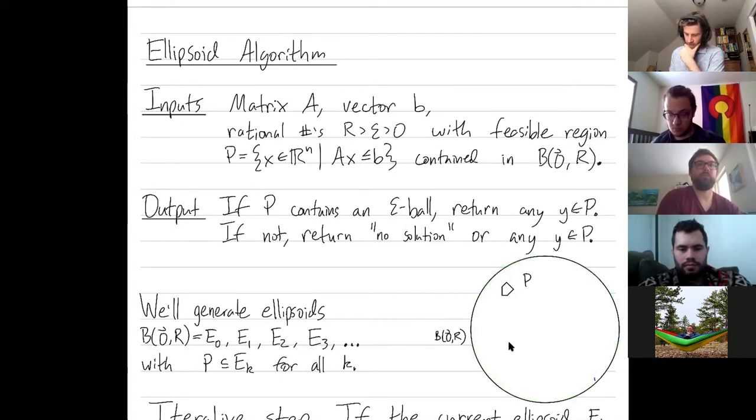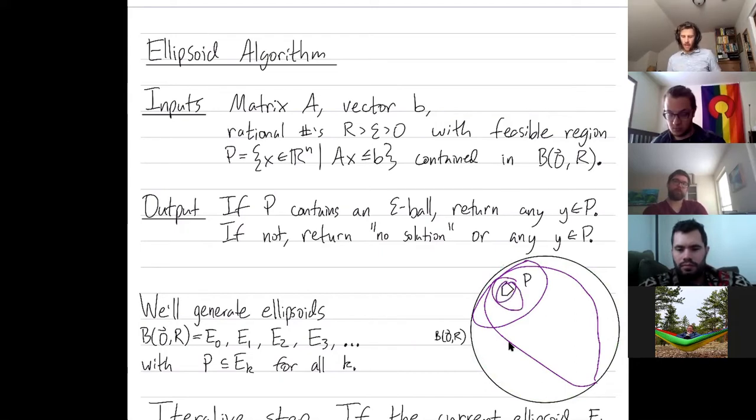And we're going to keep finding further and further ellipsoids of smaller and smaller volume that contain our feasible region. If ever the center of our ellipsoid is inside the feasible region, then we'll have succeeded. We'll have returned a point in the feasible region.